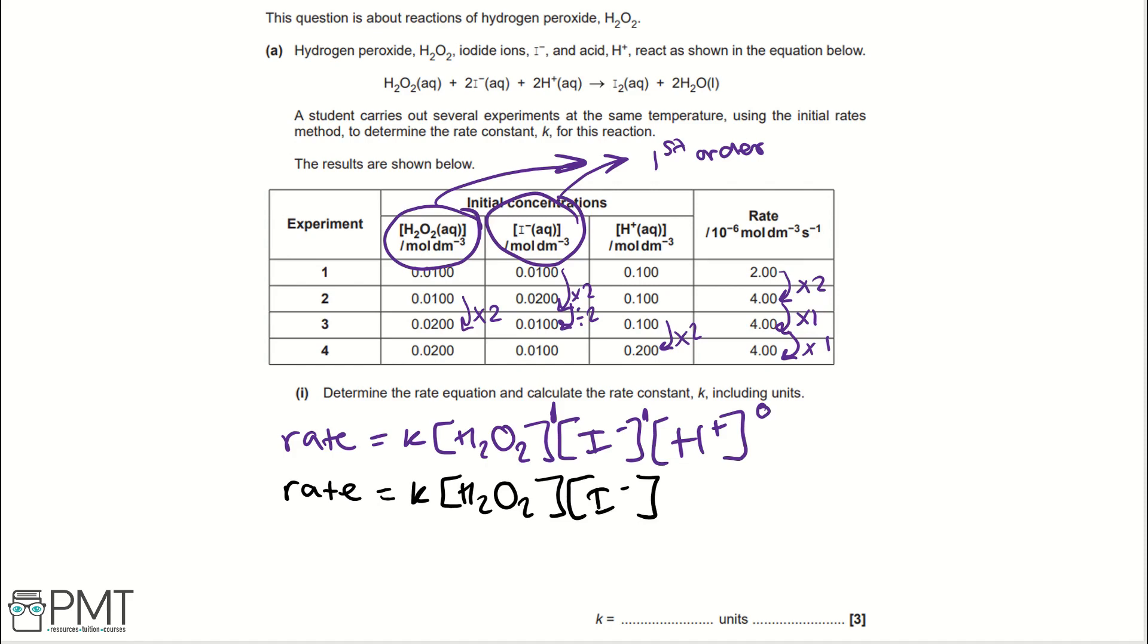Now, we need to work out rate. We can do this by subbing in values. So, if we take experiment 1, we have a rate as 2 times 10 to the negative 6, divided by the concentrations or initial concentrations of H2O2, which is 0.01 times 0.01. That gives us a value of 0.02 for our K. And then, for units, well, we have moles per decimetre cubed per second over moles per decimetre cubed times moles per decimetre cubed. Then, we need to cancel these out. So, we can cancel out a mole per decimetre cubed. And we're left with 1 over mole per decimetre cubed, S to the minus 1. Another way of writing that is mole to the minus 1 decimetres cubed per second.